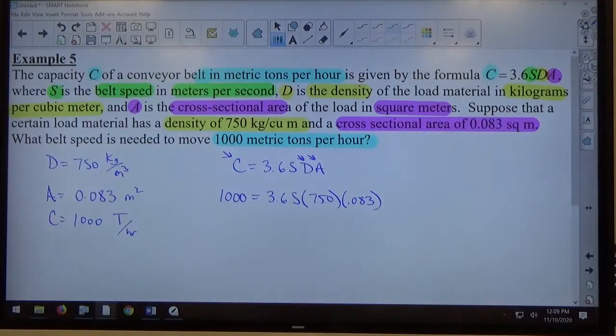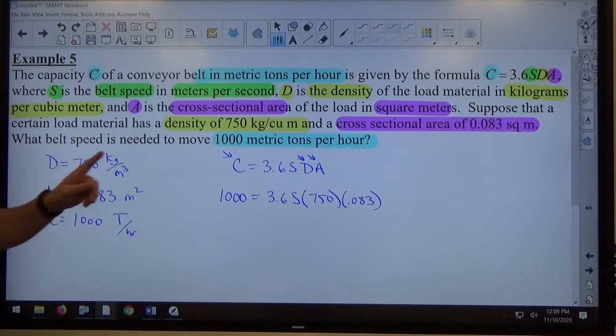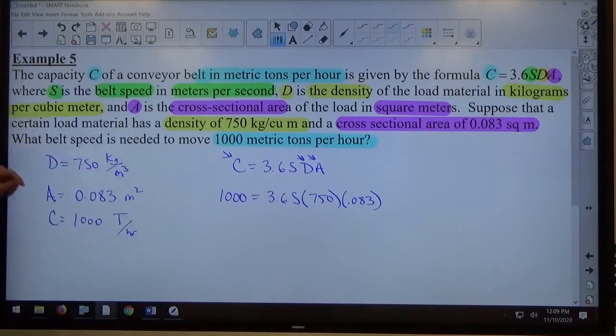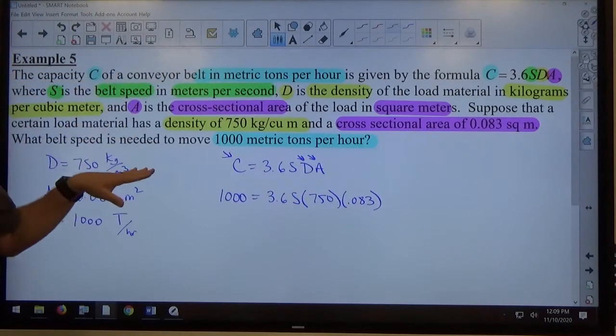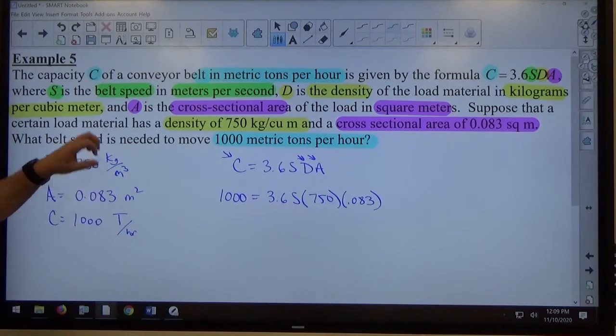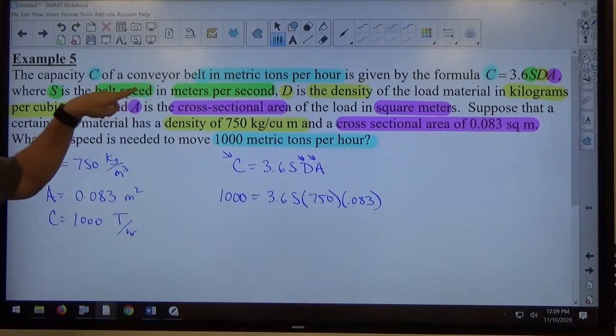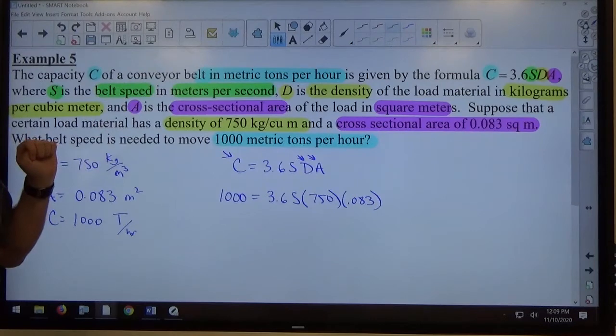Notice I did not put any units in my work. I simply substituted the numbers in because I happen to know if I'm trying to find out what S is, S is the belt speed in meters per second. So the unit I'm going to get out of this, since all these other units were what they were supposed to be based on what they told me.